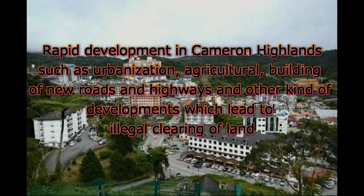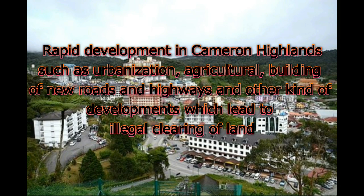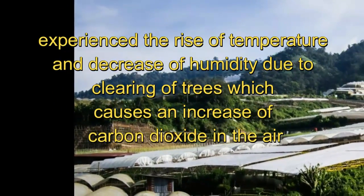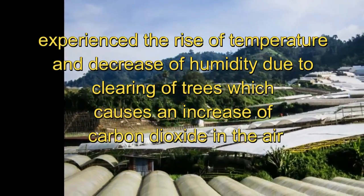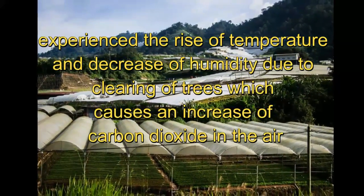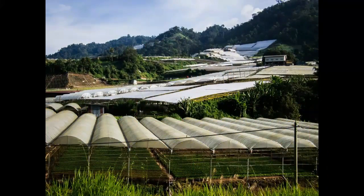Rapid development in Cameron Highland — such as urbanization, agriculture, and building of new roads and highways — has led to illegal clearing of land. This has greatly affected the natural environment where the forest cover experienced extensive loss. As a consequence, Cameron Highlands has also experienced a rise in temperature and decrease in humidity due to the clearing of trees, causing an increase of carbon dioxide in the air.